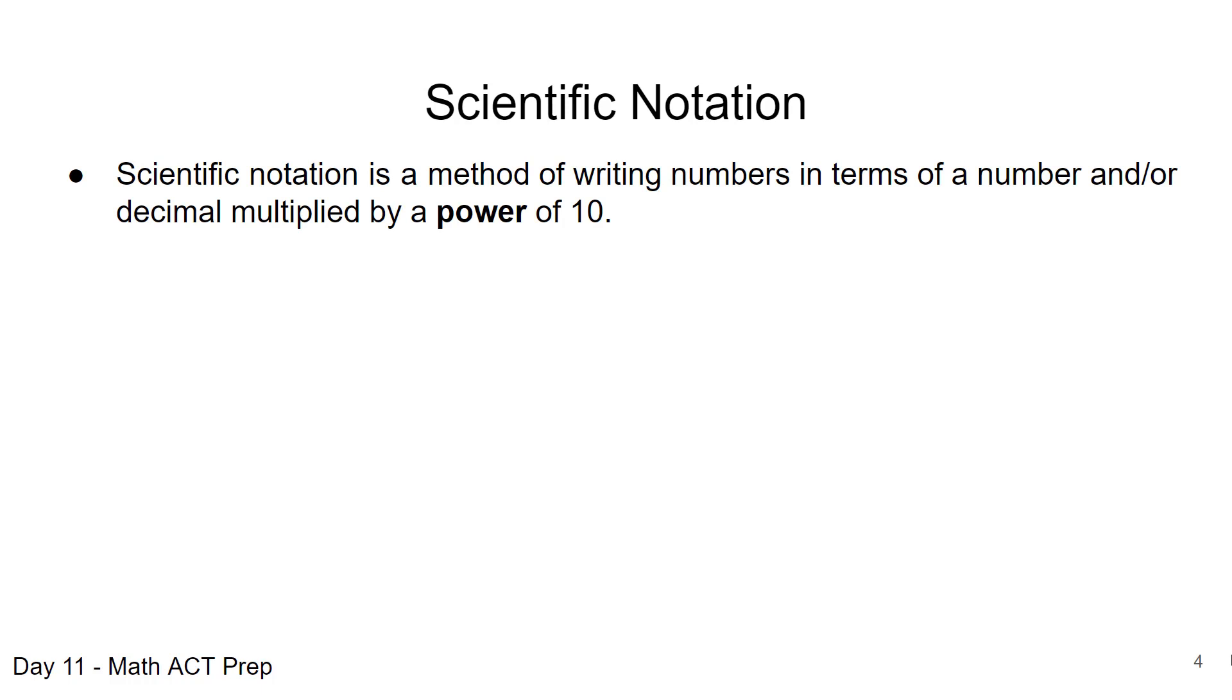When we're talking about scientific notation, this is a method of writing numbers in terms of a number and or a decimal multiplied by a power of 10. And it's usually when we have really big numbers with lots of digits or really small numbers. So it's a way of writing those numbers so that it's in a little bit more compact form.